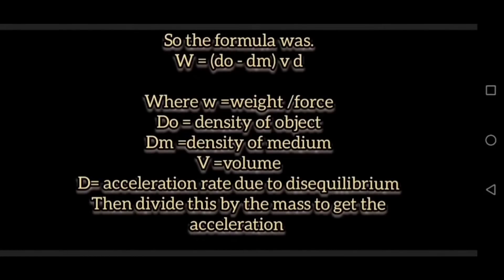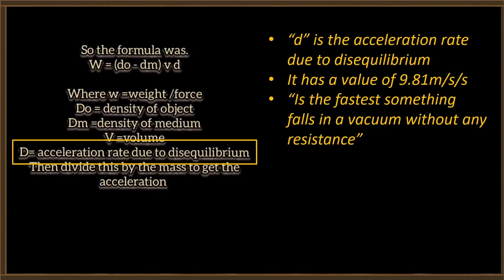Okay, so I was thinking of formulas and I come up with a new formula for acceleration, but the previous one was weight or force equals the density of the object minus the density of the medium times the volume times the disequilibrium rate of 9.81 meters per seconds per second, which is the fastest, basically, that something falls in a vacuum without any resistance kind of thing, with minimal effects, basically. Uh, this is Houston. Say again, please? Houston, we have a problem. You just told us that d in your equation is the acceleration rate due to disequilibrium. You said it has a value of 9.81 meters per second per second. That's an acceleration. Then you said it is the fastest something falls in a vacuum without any resistance. That implies a velocity.